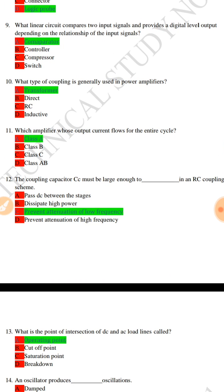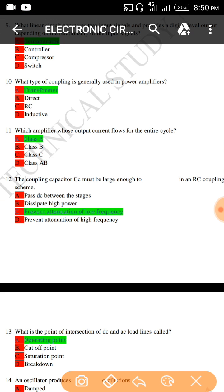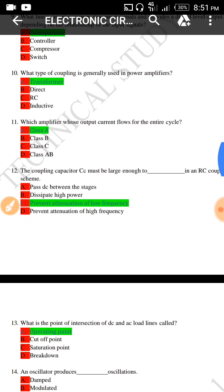What linear circuit compares two input signals and provides a digital level output depending on the relationship of the input signals? Basically comparator.